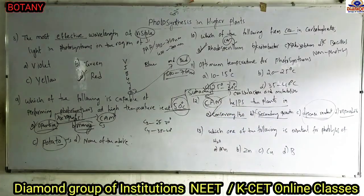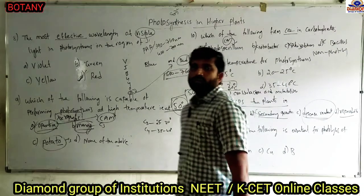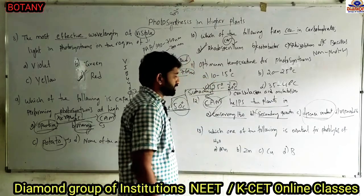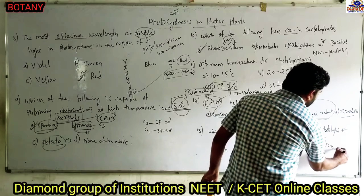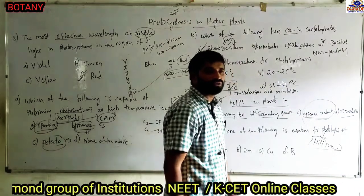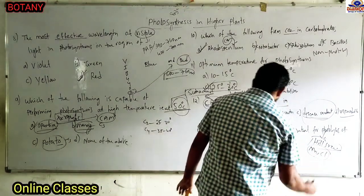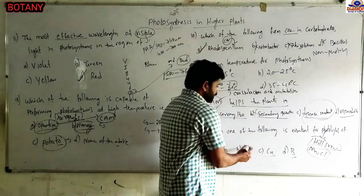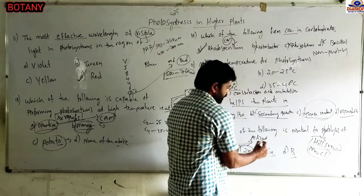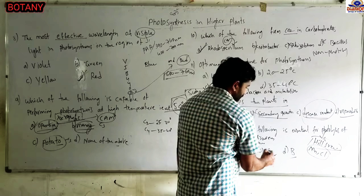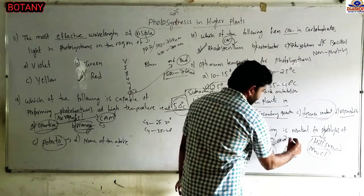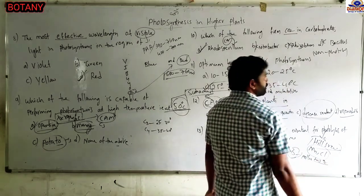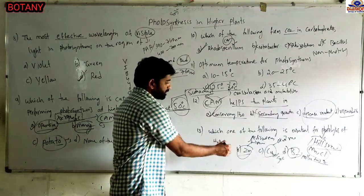Next question: Which of the following is essential for photolysis of water? Photolysis of water — splitting of water in the presence of light to form protons and electrons — is also called Hill's reaction. For photolysis of water, manganese and chlorine are required. Options: manganese, zinc, copper, and boron. Zinc is required for enzyme activation and oxygen synthesis. Copper is involved in oxidative reactions and cytochromes. Boron is used for pollen tube growth. Photolysis of water requires manganese and chlorine. Answer: manganese.